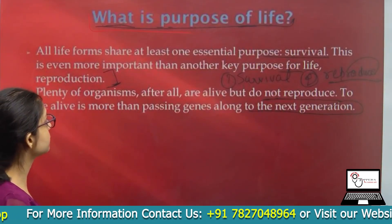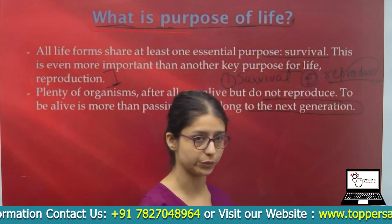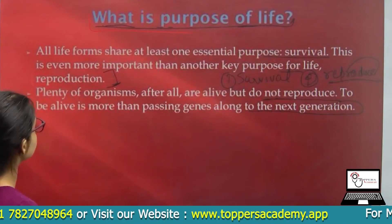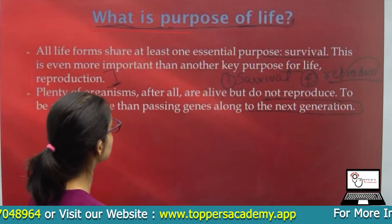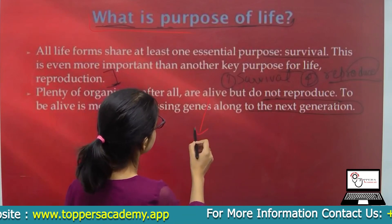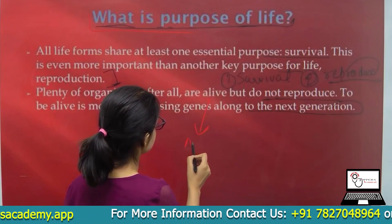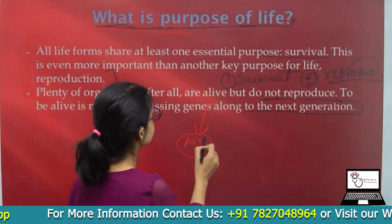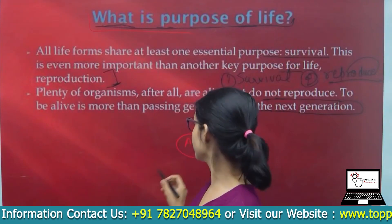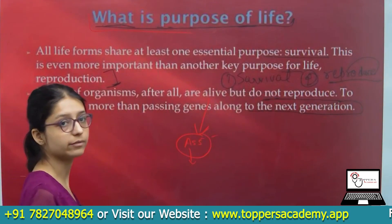Plenty of organisms are alive but do not reproduce. To be alive is more than passing genes to the next generation. For example, a mule does not reproduce, but it is alive.